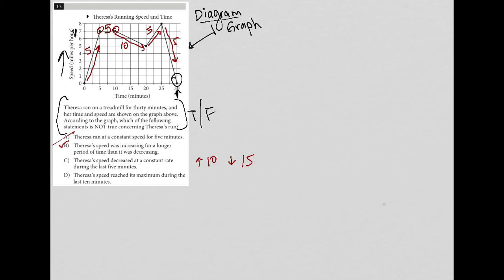So choice C says Teresa's speed decreased at a constant rate during the last five minutes. Well, yeah, that's true. The whole constant rate thing just means that it's going to be a straight line, right? So we have a straight line decrease over the last five minutes here, so that is definitely true.